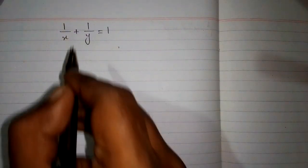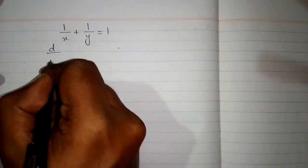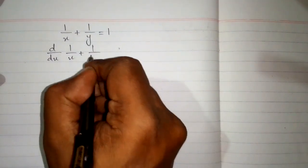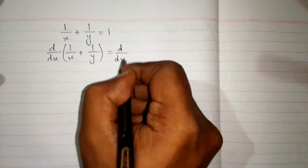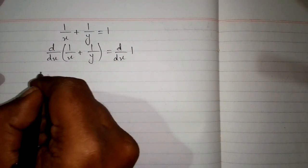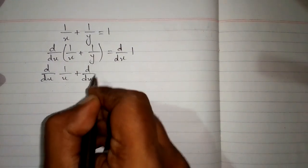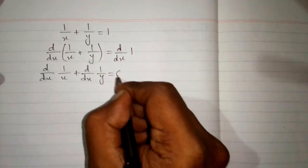In this video we will find the derivative of the function defined implicitly. First we will take the derivative of both sides. So we have d/dx of (1/x + 1/y) is equal to d/dx of 1. Now we will apply the derivative on both the terms: d/dx of 1/x plus d/dx of 1/y. The derivative of a constant is 0.